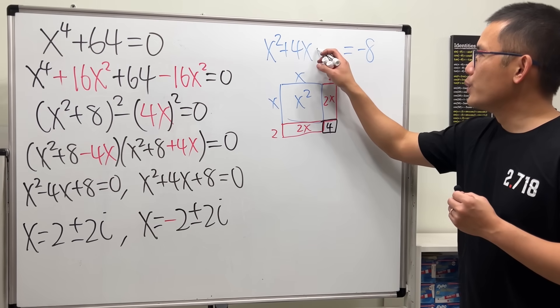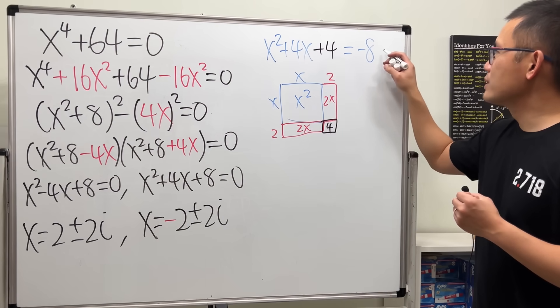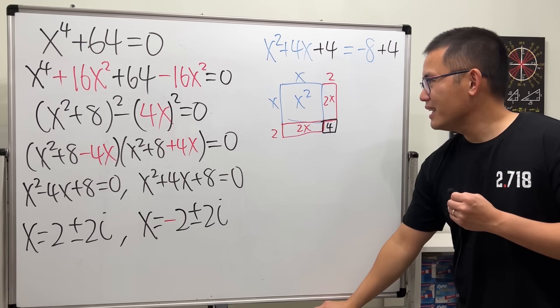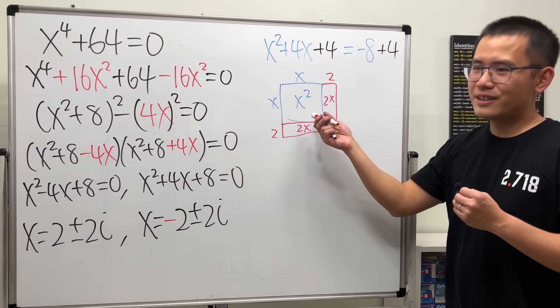So, right here, we will have to add 4. And, of course, we have to do the same thing to the other side. And, then, if you look at this picture, you can factor it right away. That's just x plus 2 times x plus 2, which will give us x plus 2 squared.